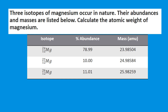Now we have three isotopes of magnesium occurring in nature, with their abundances and masses given, and we need to calculate the atomic weight of magnesium. Note that the mass number and the actual mass in AMU are two different numbers — approximately the same but not identical. The mass is slightly less than the mass number, even though we'd expect a whole number based on protons and neutrons.